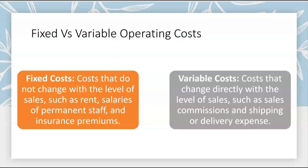To understand operating leverage we need to know the difference between fixed and variable operating costs. Fixed operating costs do not change with the level of sales — such as rent, salaries of permanent staff, and insurance premiums. Variable operating costs change directly with the level of sales; think of sales commissions — if your sales people get paid commissions from every sale, those commissions are variable costs.